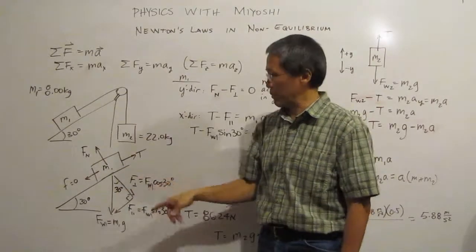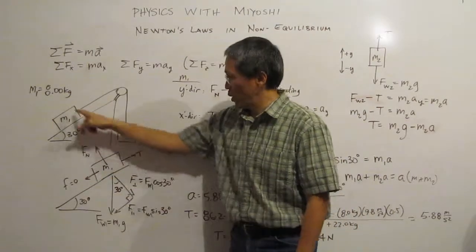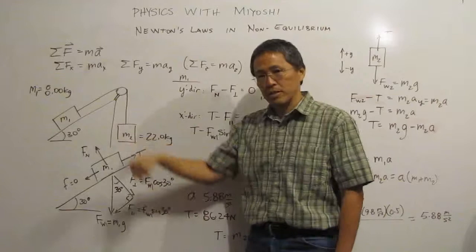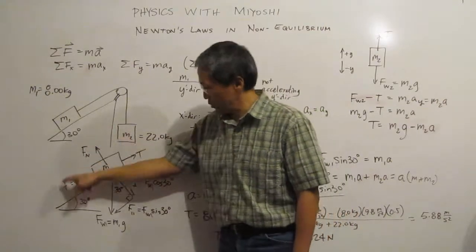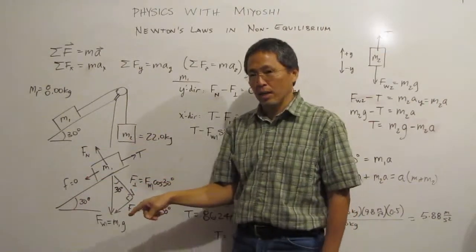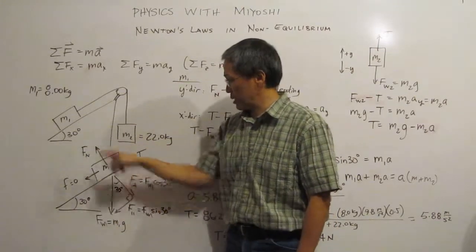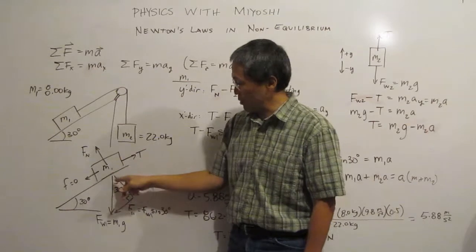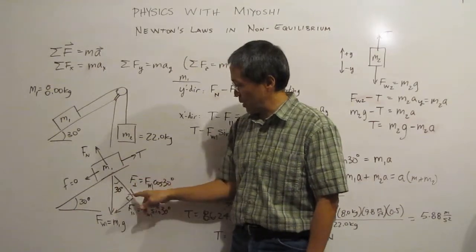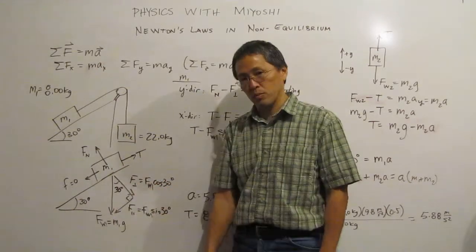When we do this problem, we're going to make two free body diagrams. One for this guy and one for this guy. When we do this free body diagram, we're going to adjust our axis so that we're parallel to the motion and perpendicular to the motion. And then we can draw our weight as a perpendicular and parallel component as well.